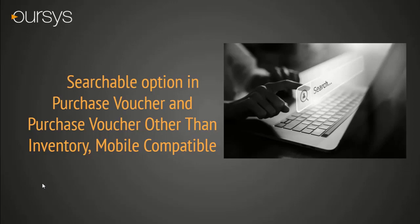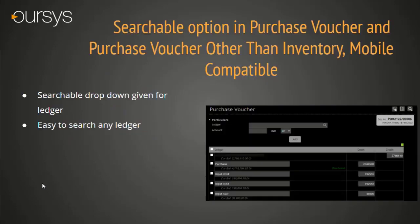Searchable option in Purchase Voucher and Purchase Voucher other than Inventory. This function has been added in the Account module. In the Purchase Voucher detail level, under the particular section, there is a ledger dropdown. Earlier, this dropdown showed all ledgers in a scrolling list. Now, the user can type the ledger name and search the records, which will help to reduce scrolling time.